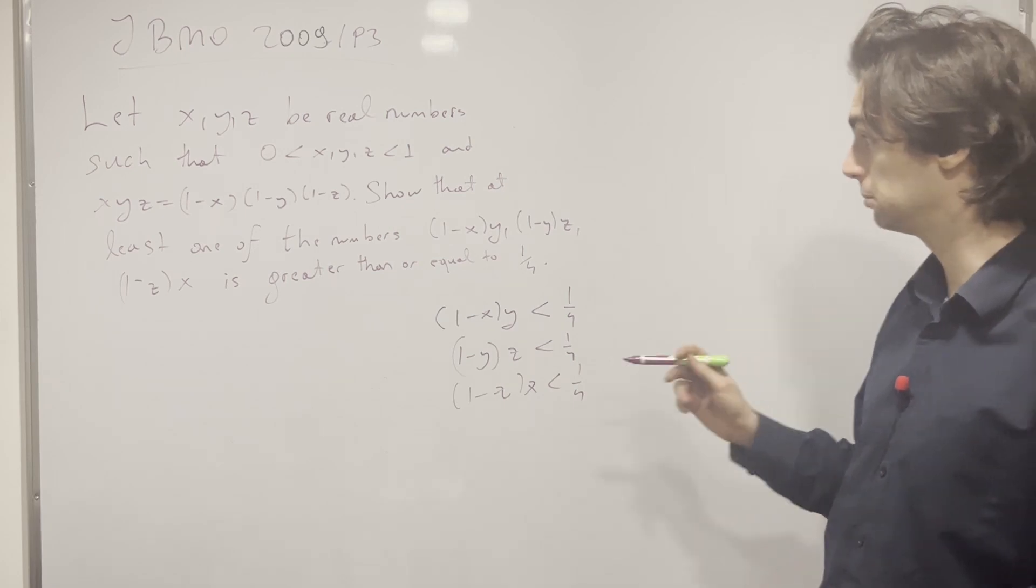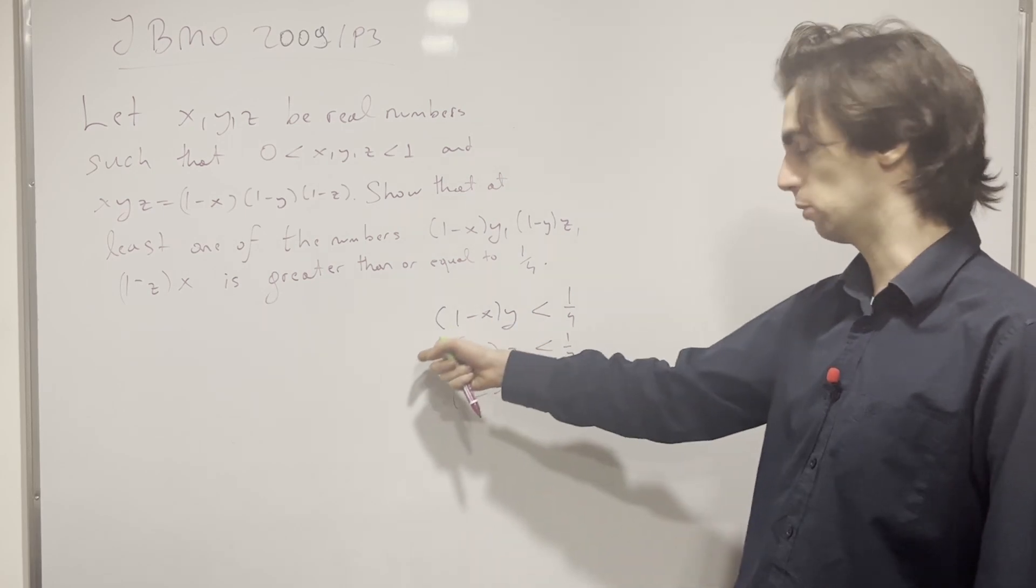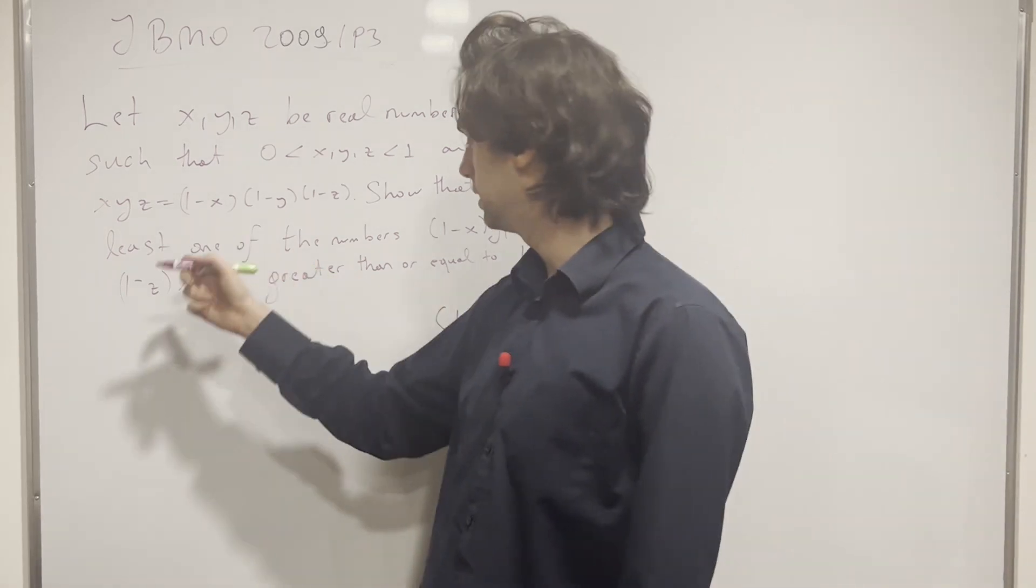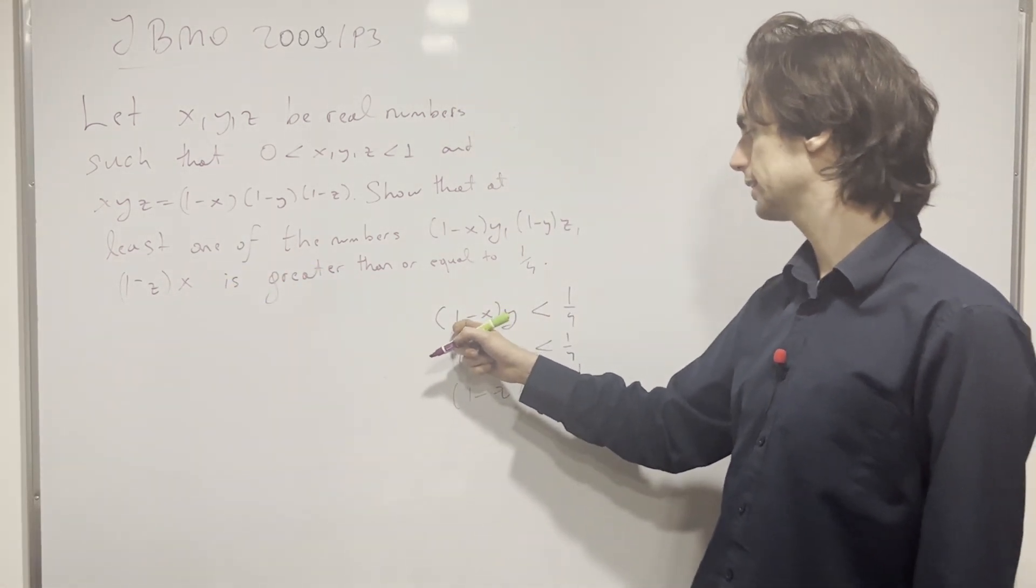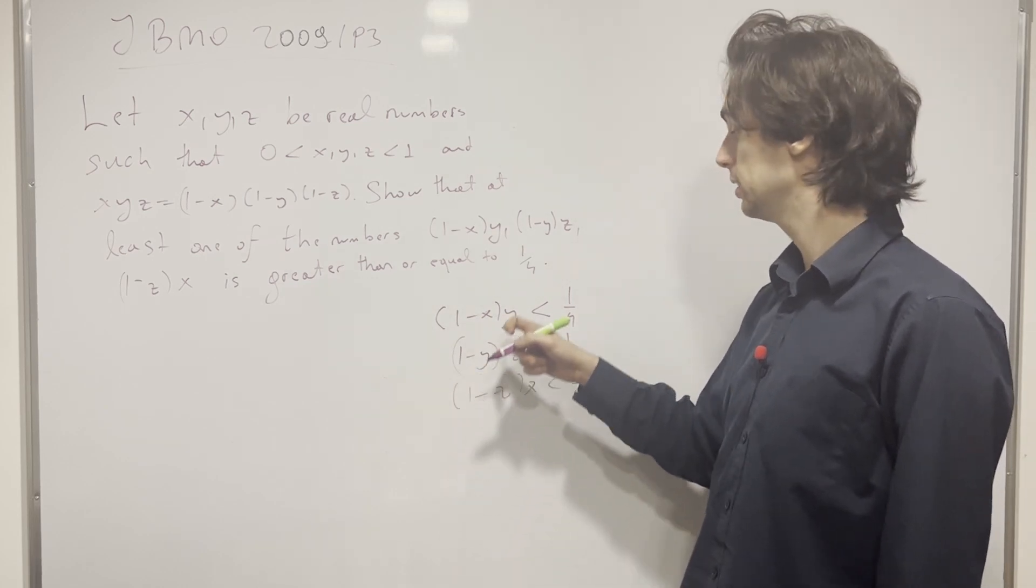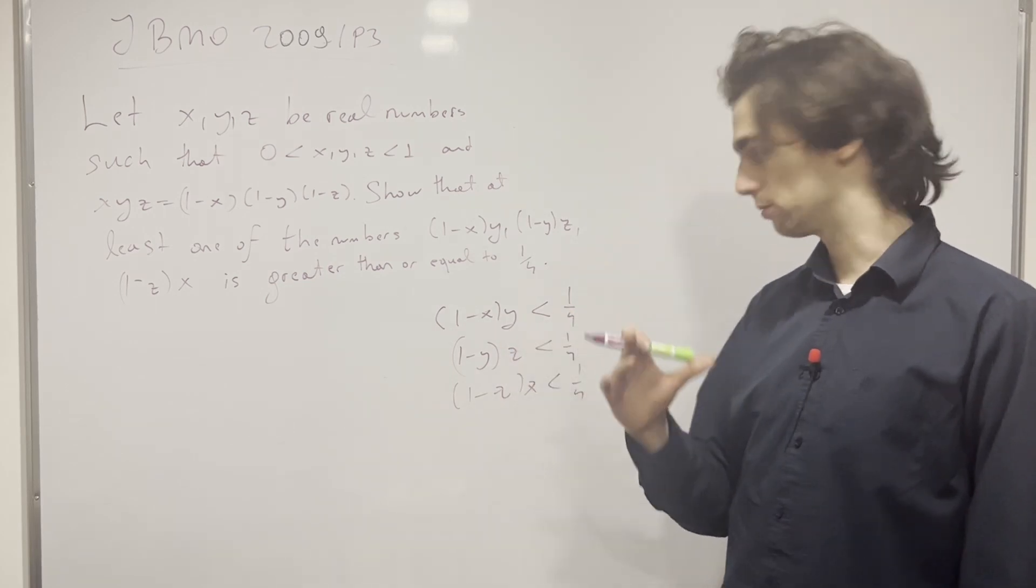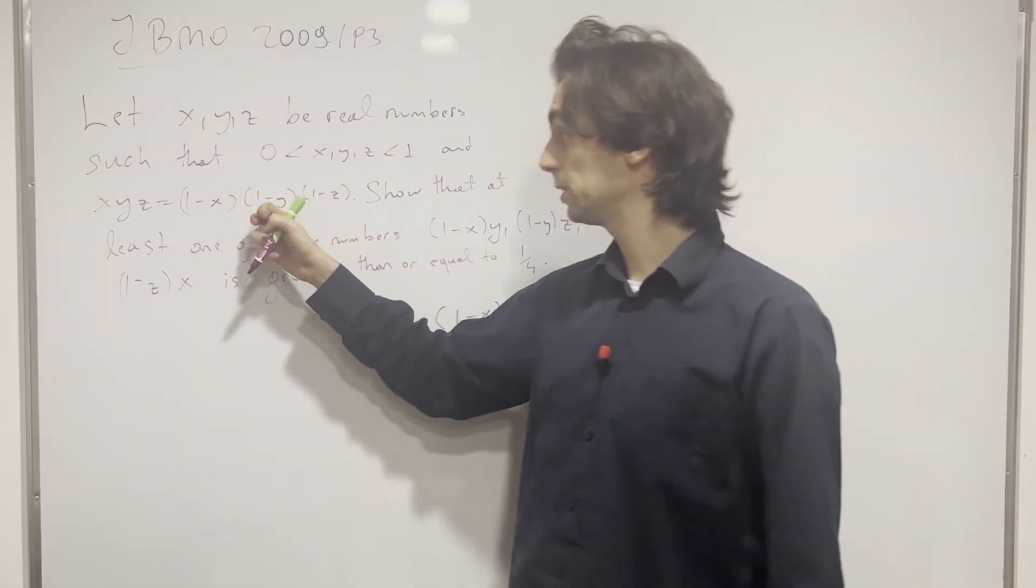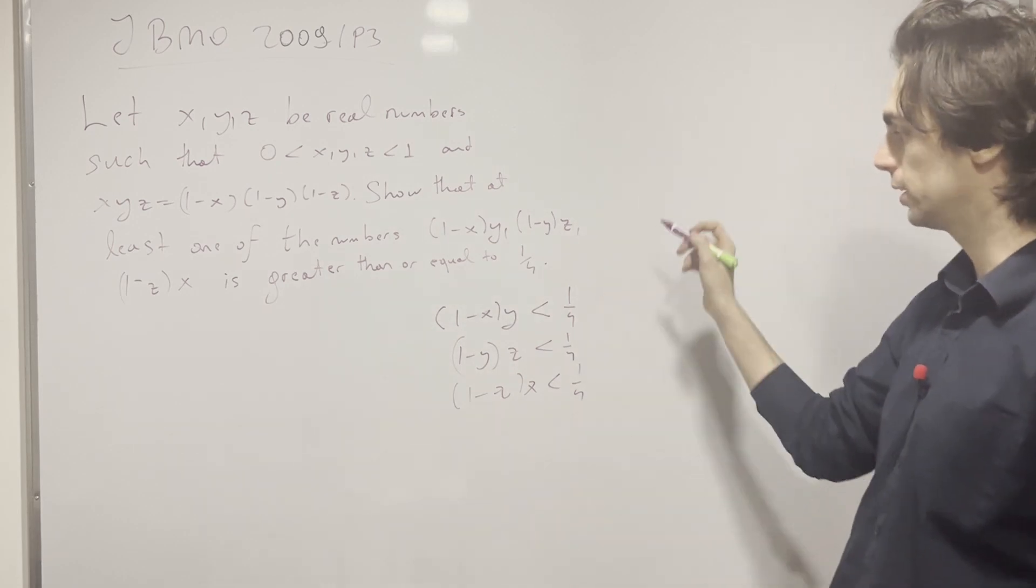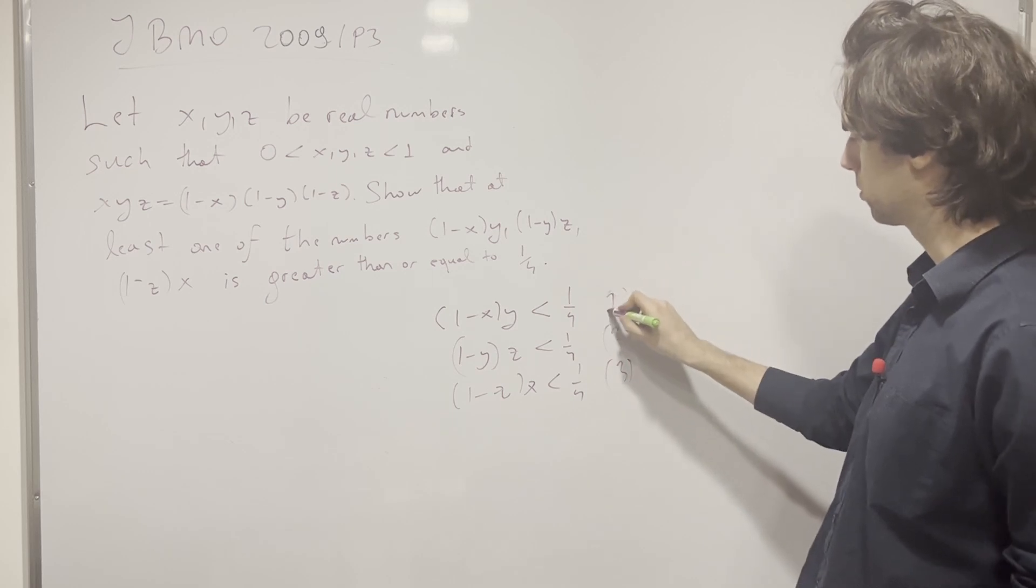And for me, one thing I'm seeing is if I multiply all of these together, inequalities which are positive, I can multiply. And then I get that when I multiply all these together, I get 1 minus x times 1 minus y times 1 minus z times x times y times z is less than 1 over 4 to the power of 3. However, 1 minus x times 1 minus y times 1 minus z is x, y, z. So I'll get an interesting relationship when I multiply all of these inequalities together, right?